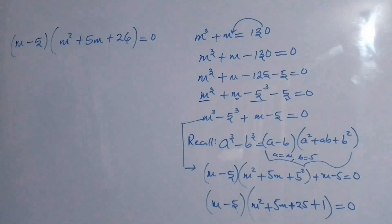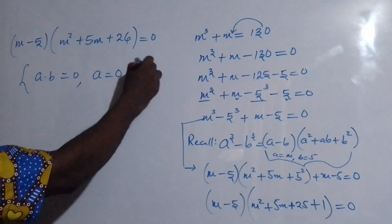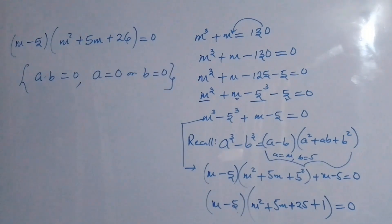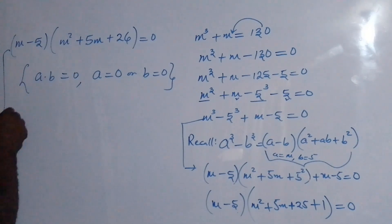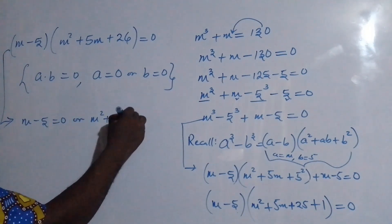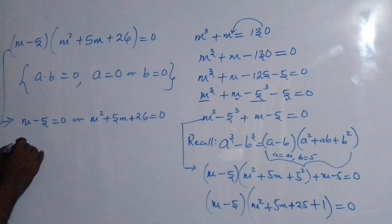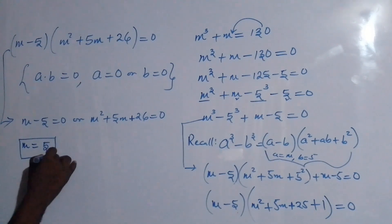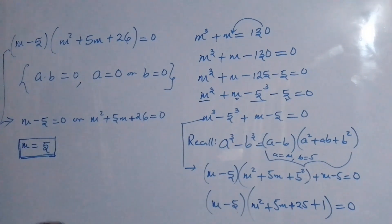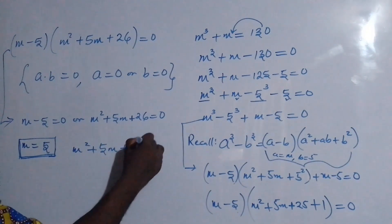This is the product of two factors. By the zero product law, if a times b equals 0, then a equals 0 or b equals 0. Therefore, this gives us m minus 5 equal to 0, or m squared plus 5m plus 26 equal to 0. From the first factor, m equals 5 — that is one solution.